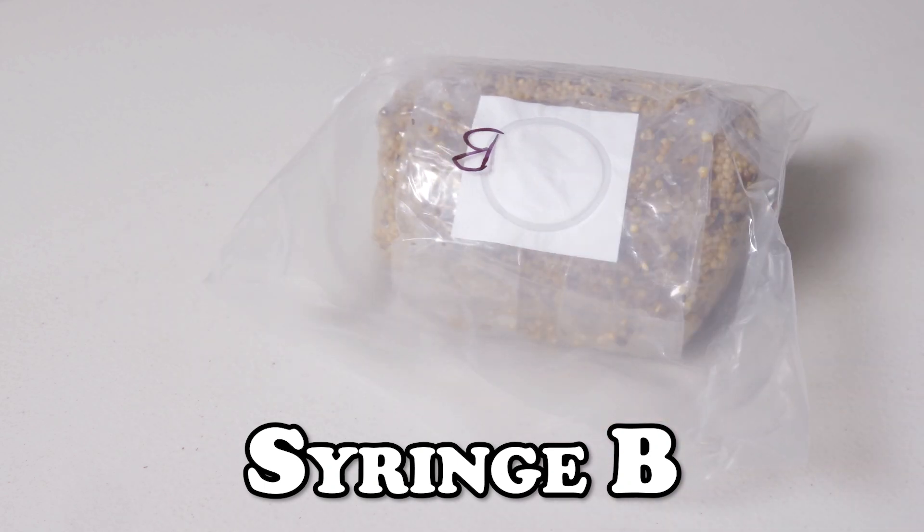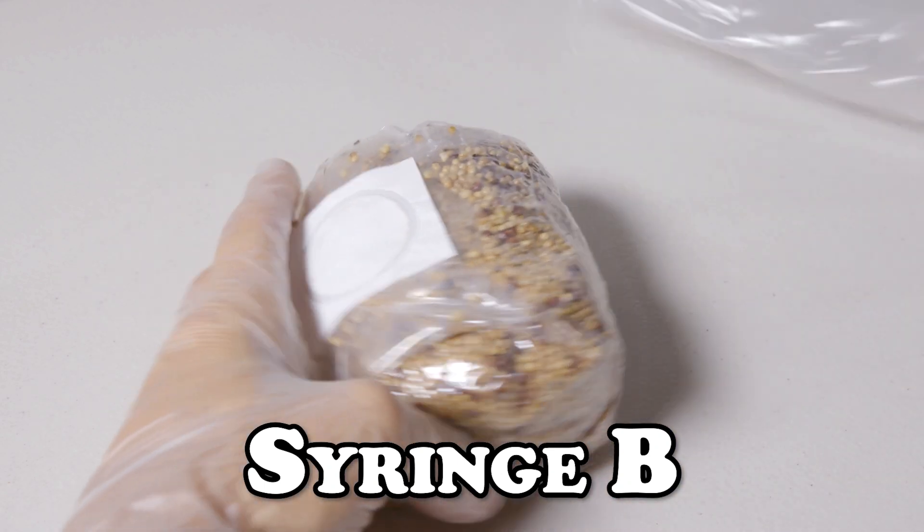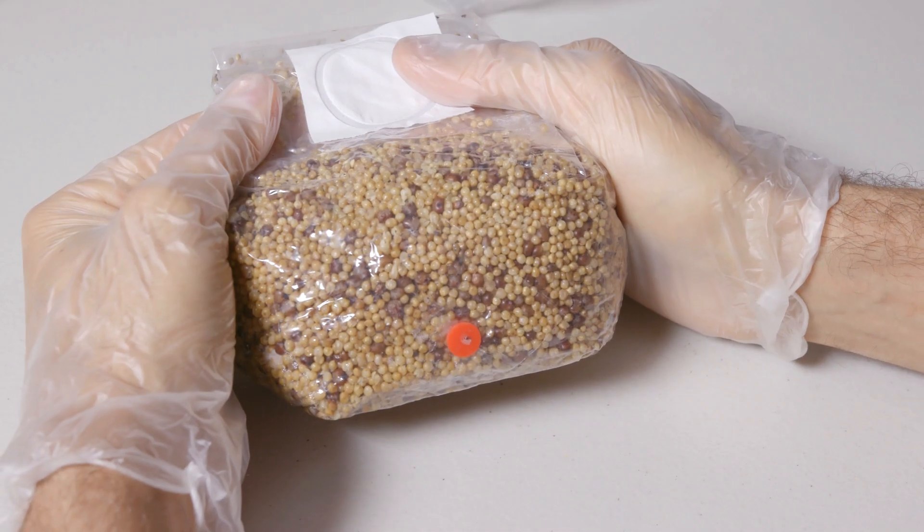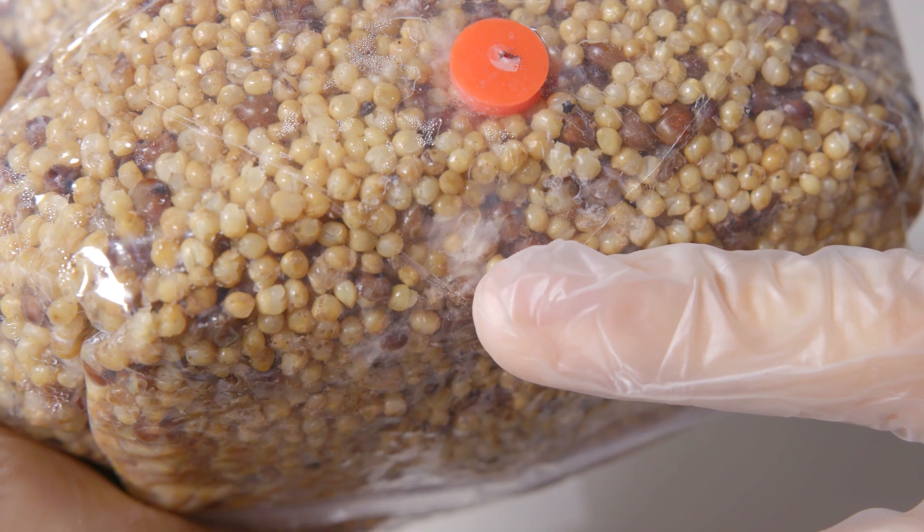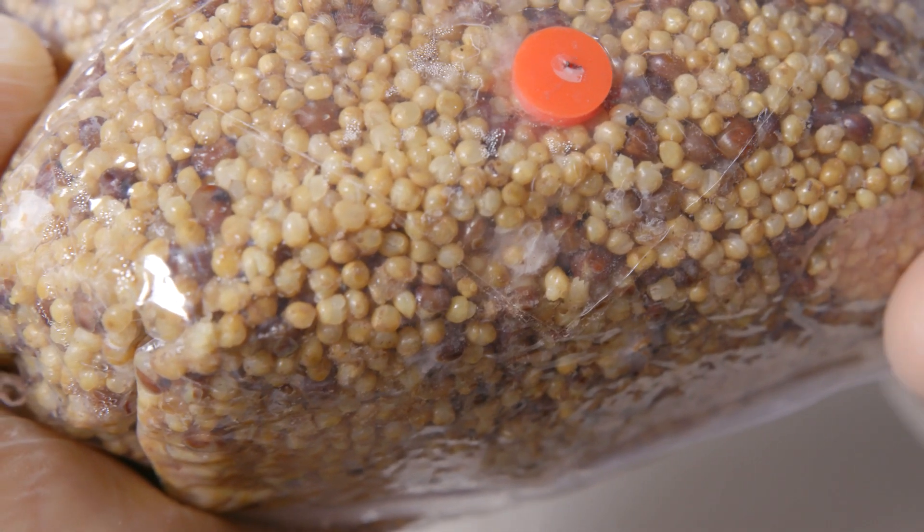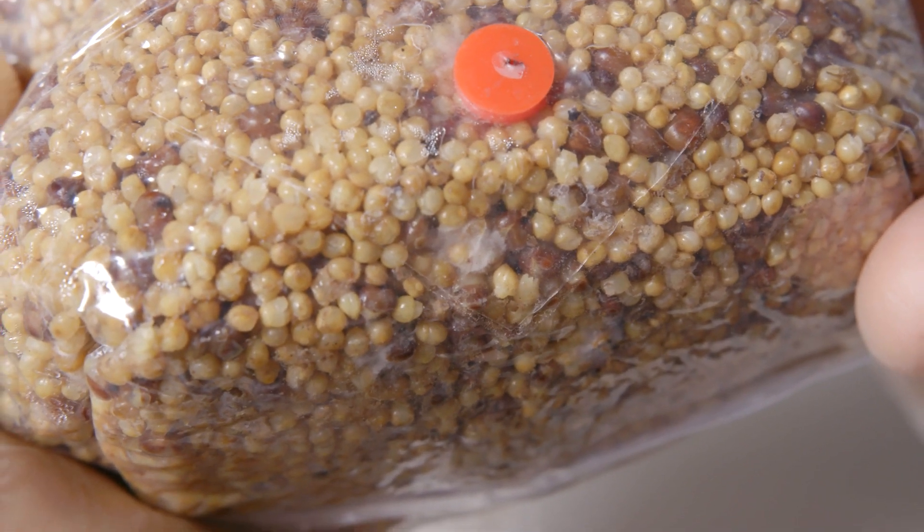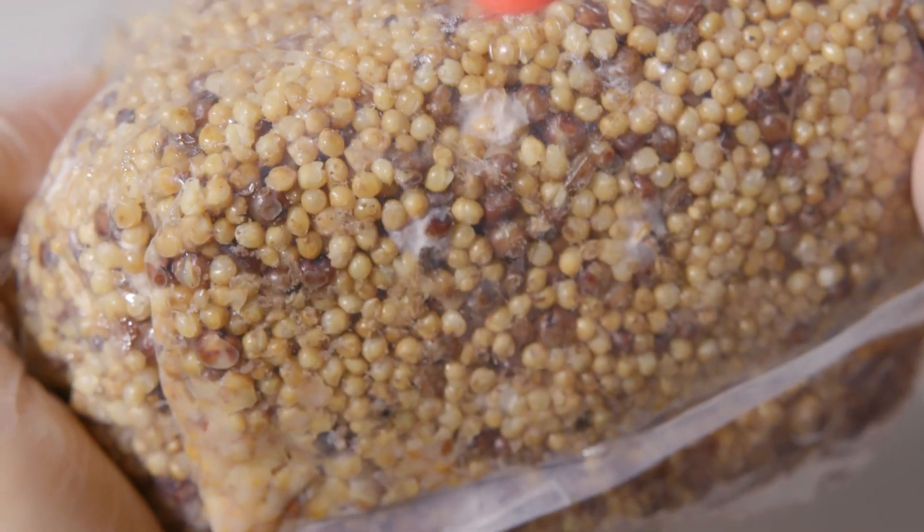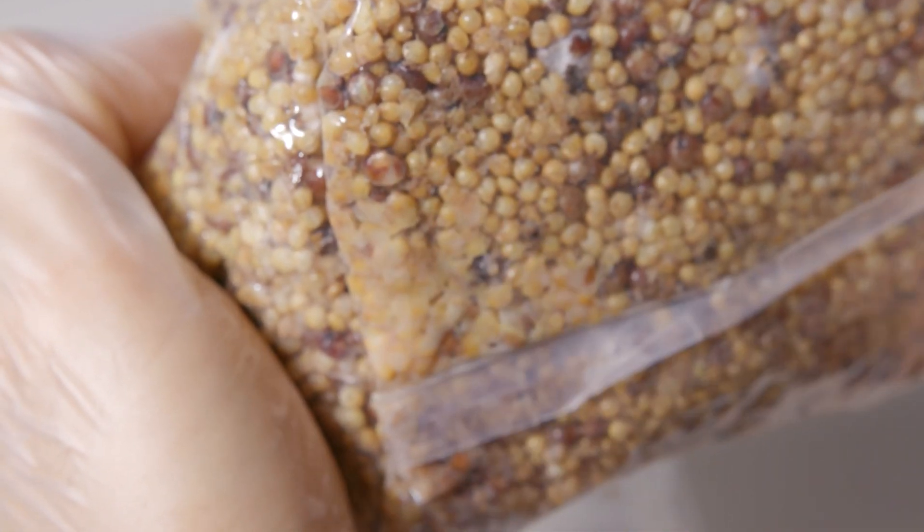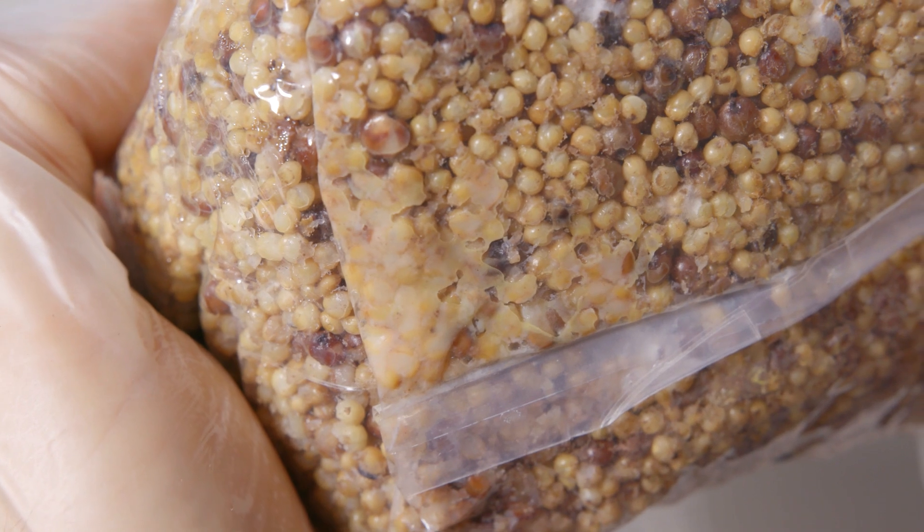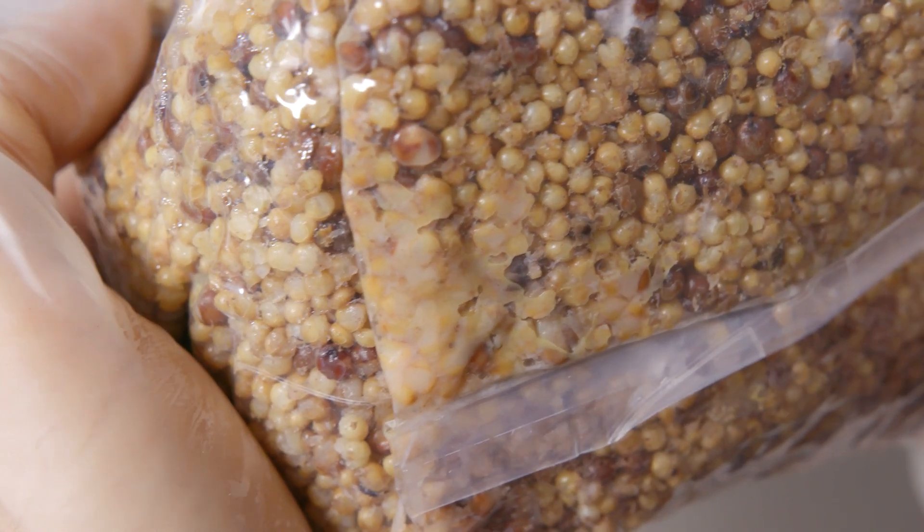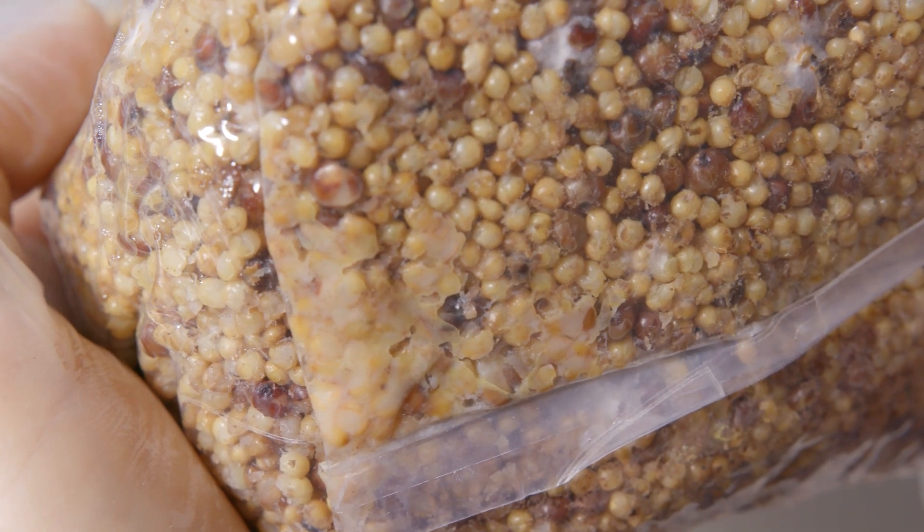Next up we have syringe B. On first impression it doesn't seem like much is happening. We do have a few spots of mycelium developing throughout, although it's a bit wispy and nowhere near as robust as the last bag. Here in the bottom we do have a few more spots forming, but notice on the left the grains have a sheen to them and they're turning a bit mushy, which indicates that bacteria are beginning to metabolize down the grain. We'll leave the bag alone for now and come back to it in a couple of weeks.